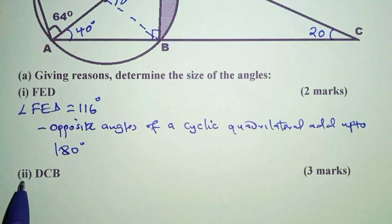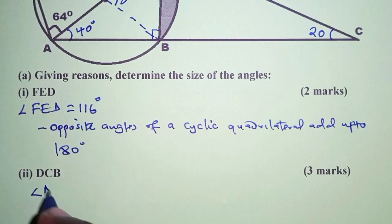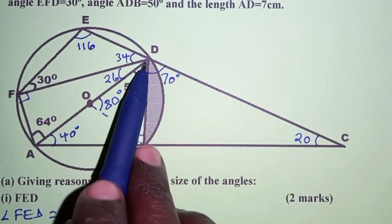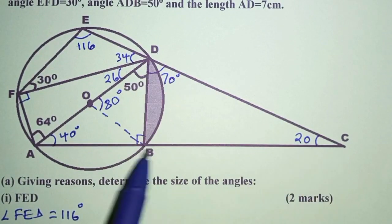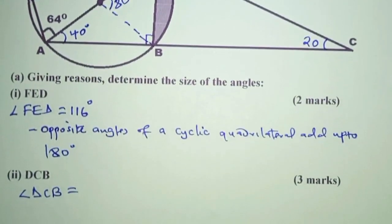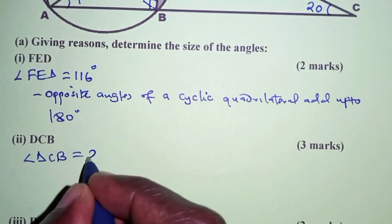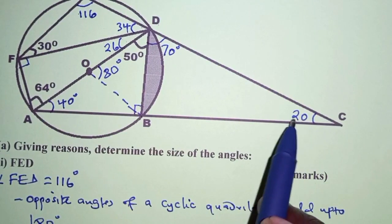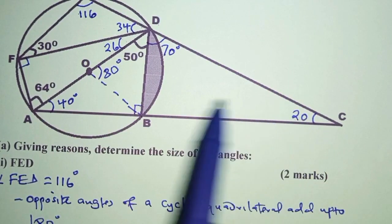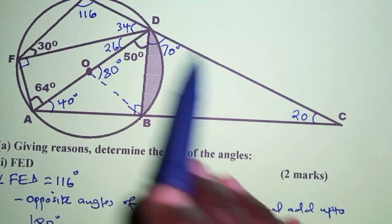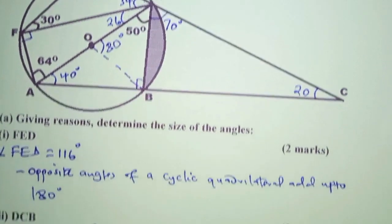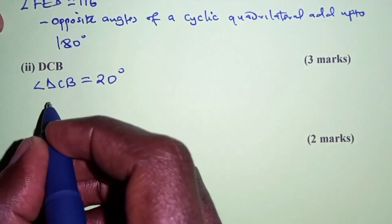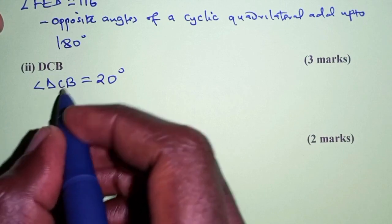For part 2, angle DCB is 20 degrees. The reason: we considered triangle ACD, and angles of a triangle add up to 180 degrees.